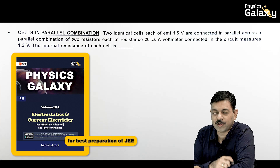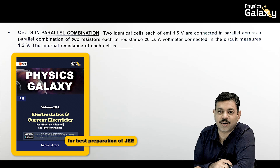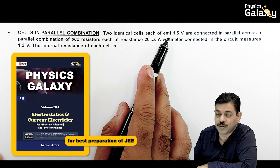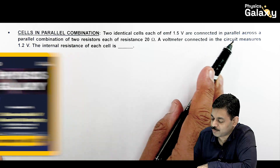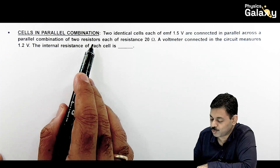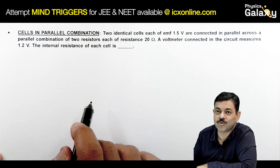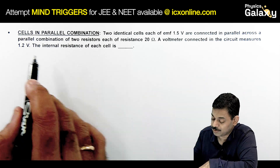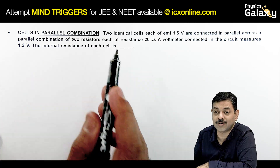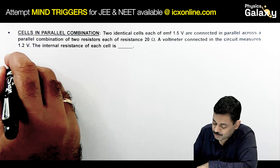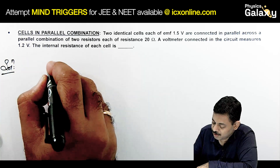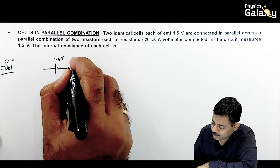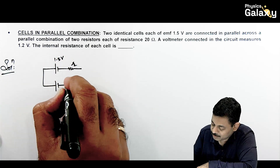Now we will talk about cells in parallel combination. Two identical cells each of EMF 1.5 volt are connected in parallel across a parallel combination of two resistors each of 20 ohm. A voltmeter connected in the circuit measures 1.2 volt. We want to calculate the internal resistance of the cell.